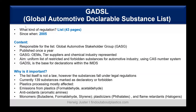Why is GADSL important? The list itself is not law; however, the substances fall under legal regulation. Using the CAS number system, there are currently around 139 substances marked as declaratory or forbidden. In the plastics industry, mainly plastics processing companies are affected — think of emissions from plastics such as formaldehyde, acetaldehyde, or antioxidants like aromatic amines, as well as monomers like butadiene, formaldehyde, and styrene.